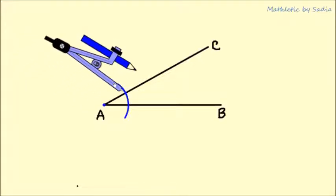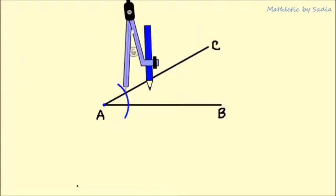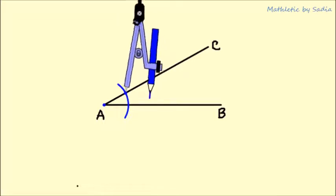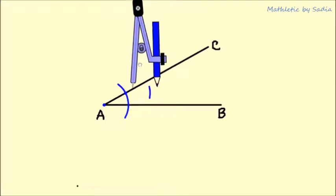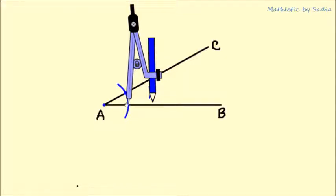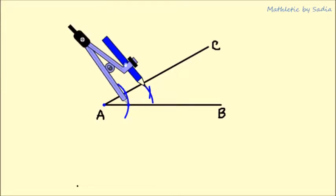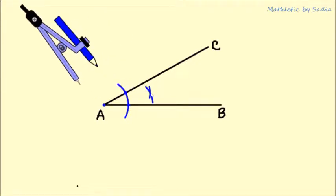Draw another arc. Repeat the same process by placing the needle at the second intersecting point and drawing another arc. The arcs intersect at a point. Join this point and A to get a straight line.